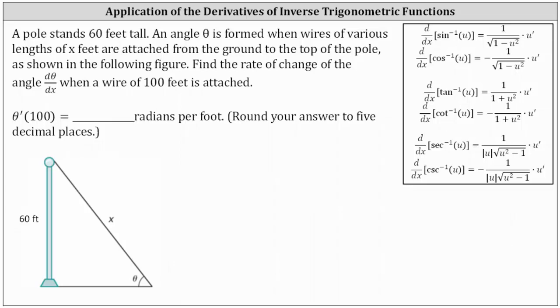A pole stands 60 feet tall. An angle theta is formed when wires of various lengths of x feet are attached from the ground to the top of the pole, as shown in the following diagram. So we have a pole height of 60 feet, a wire length of x feet, and the angle theta would be the angle of elevation.